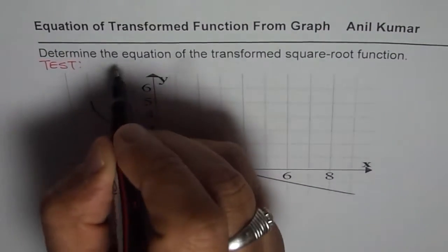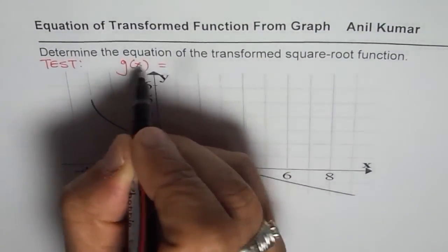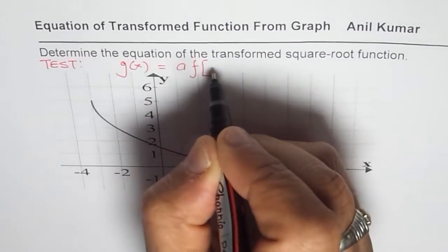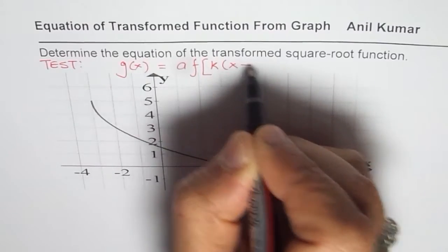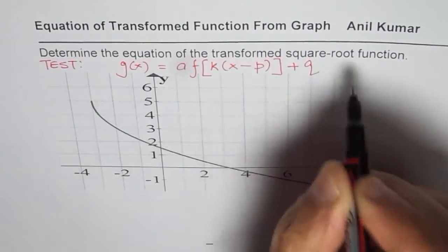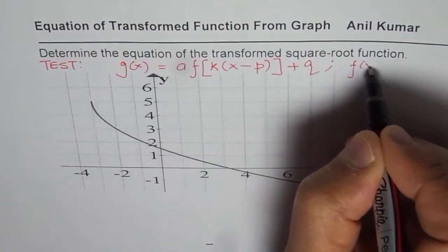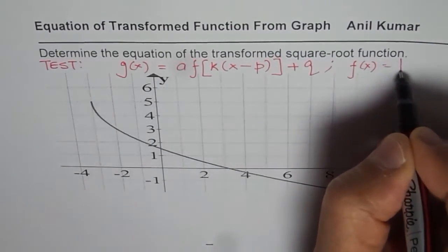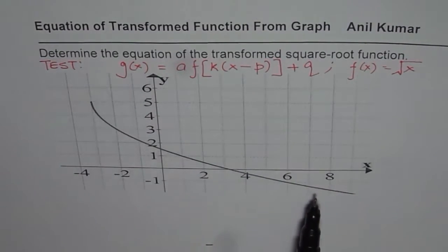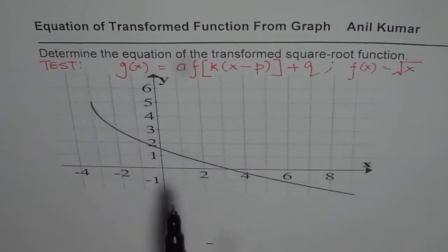You need to write the transformed function in the form g(x) = a · f(k(x − p)) + q, where f(x) is the square root function. That is given to you. At the end of the exercise you should get the equation of the transformed function from this graph.